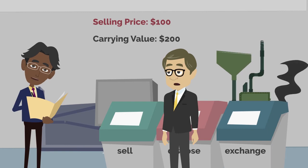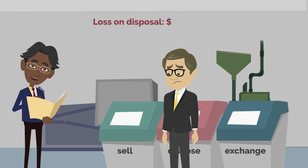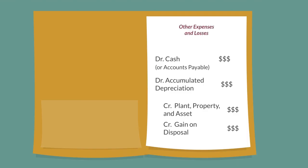On the other hand, if a company sells the asset for less than its book value at time of sale, the company makes a loss on disposal. This is recorded in the other expenses and losses section of the income statement, and is much like the expense account, which also has a debit normal balance.